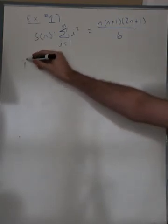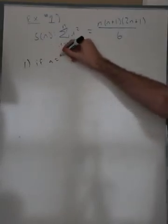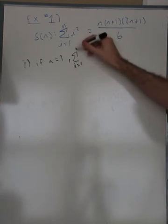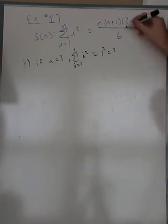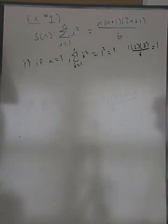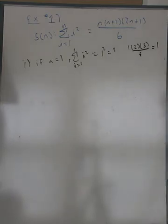Remember our steps. Step one is the base case: if n equals 1, then the summation from i equals 1 to 1 of i squared equals 1 squared, which equals 1. On the other side, we have 1 times 2 times 3 over 6, which is also equal to 1. So the result is true for n equals 1, and this establishes our base case.